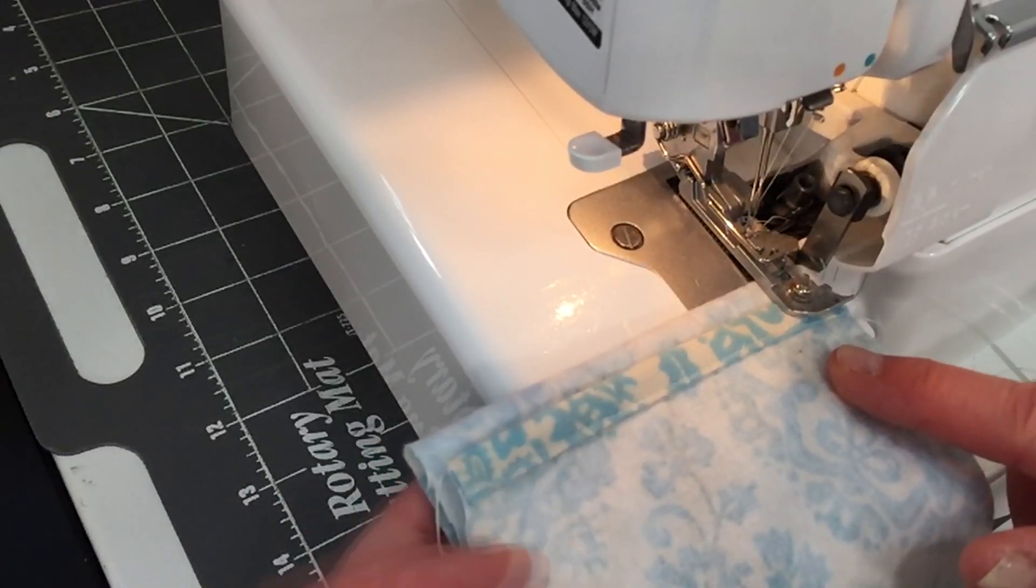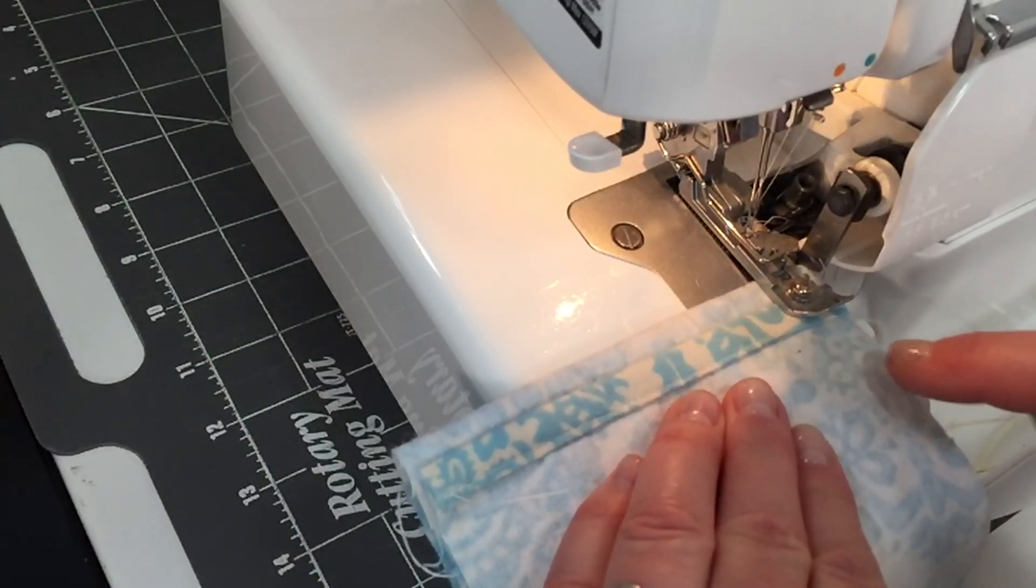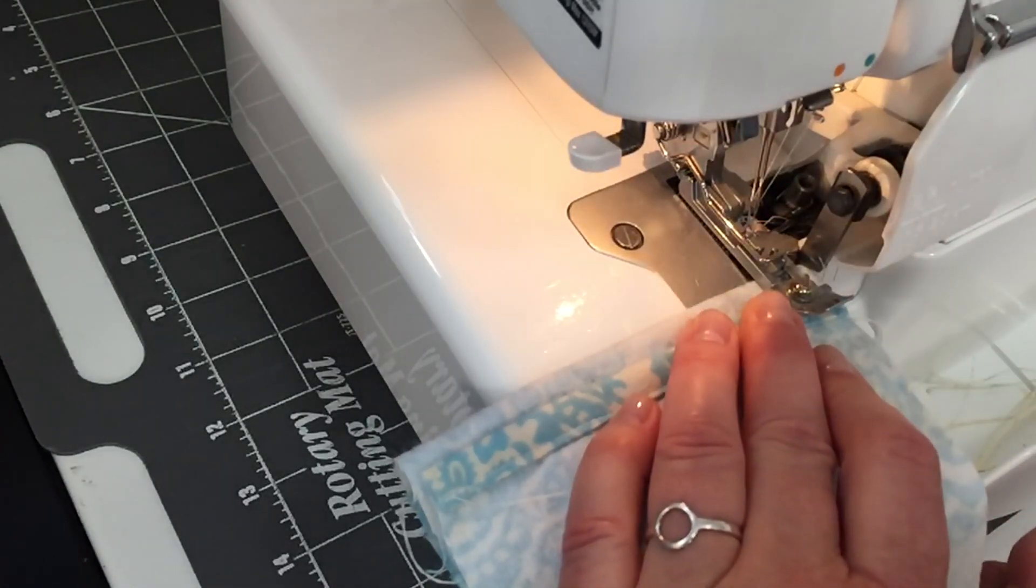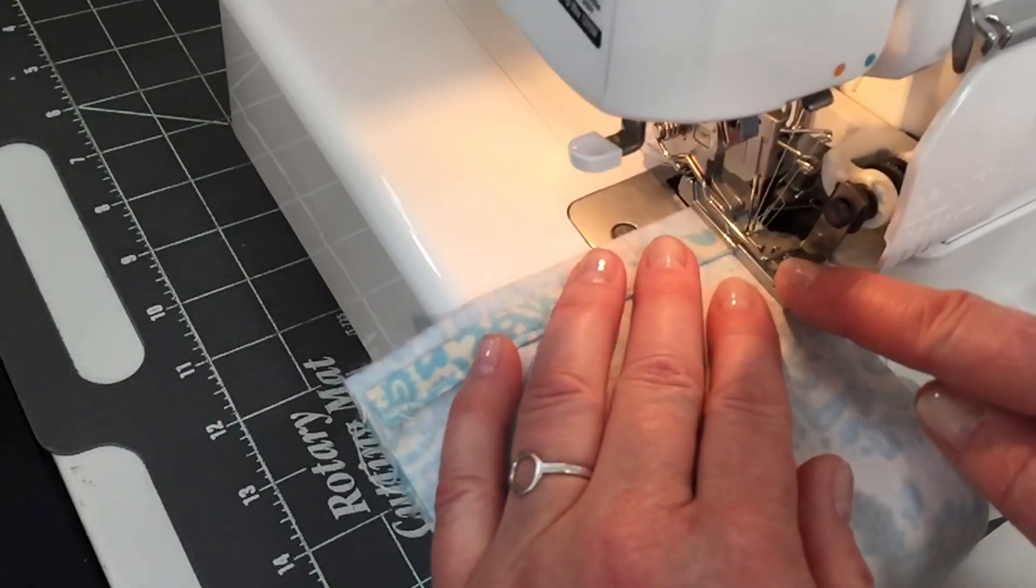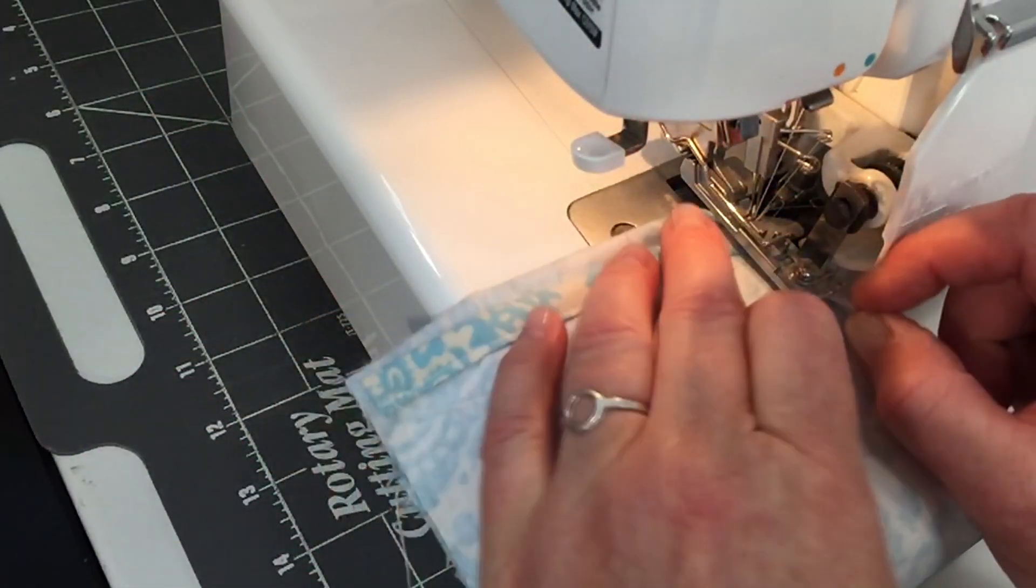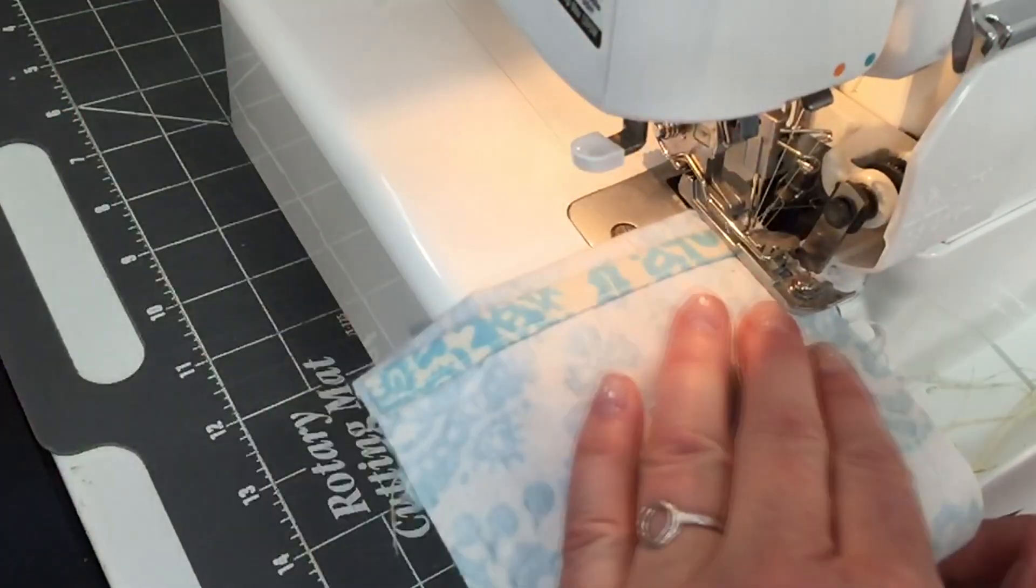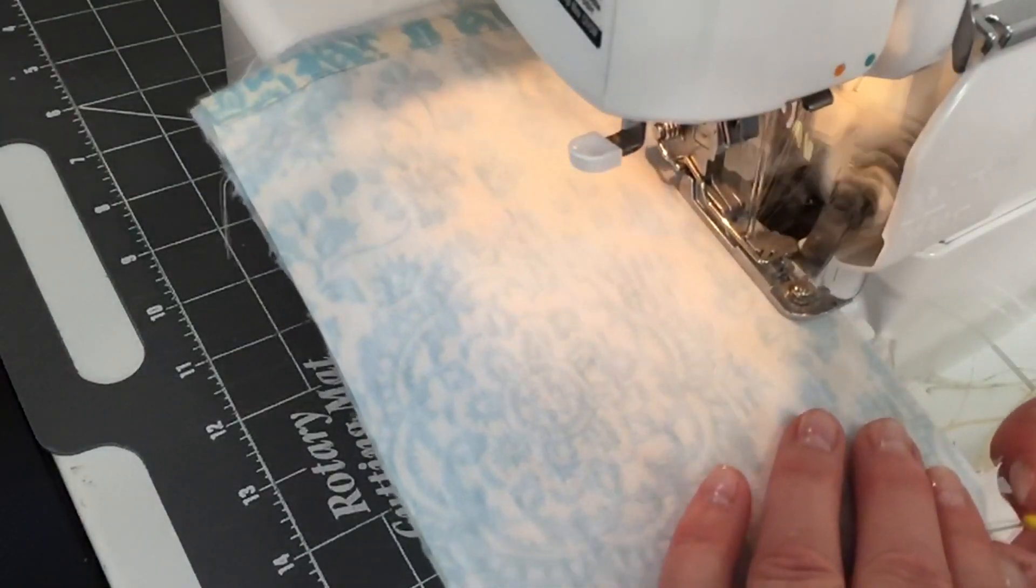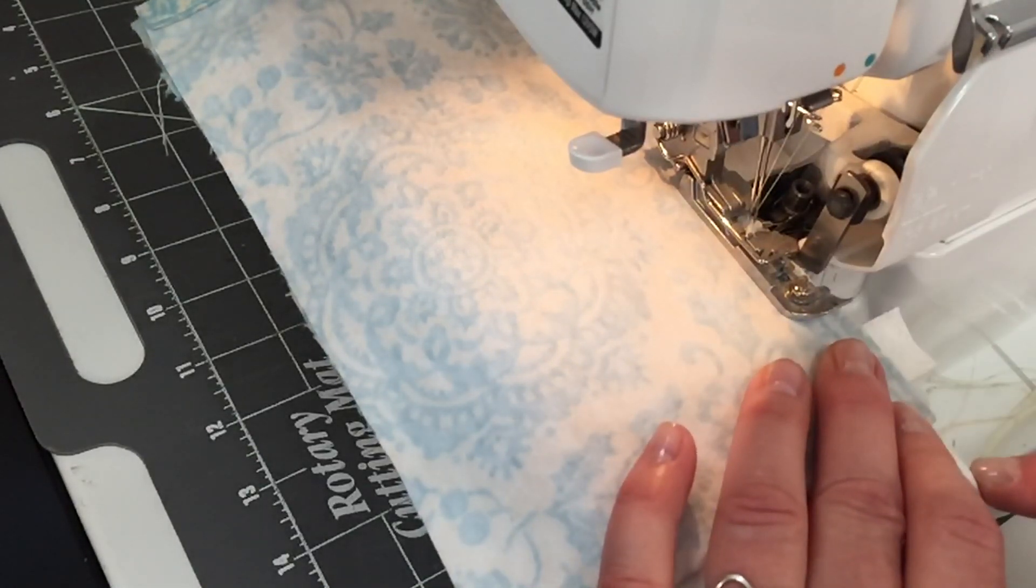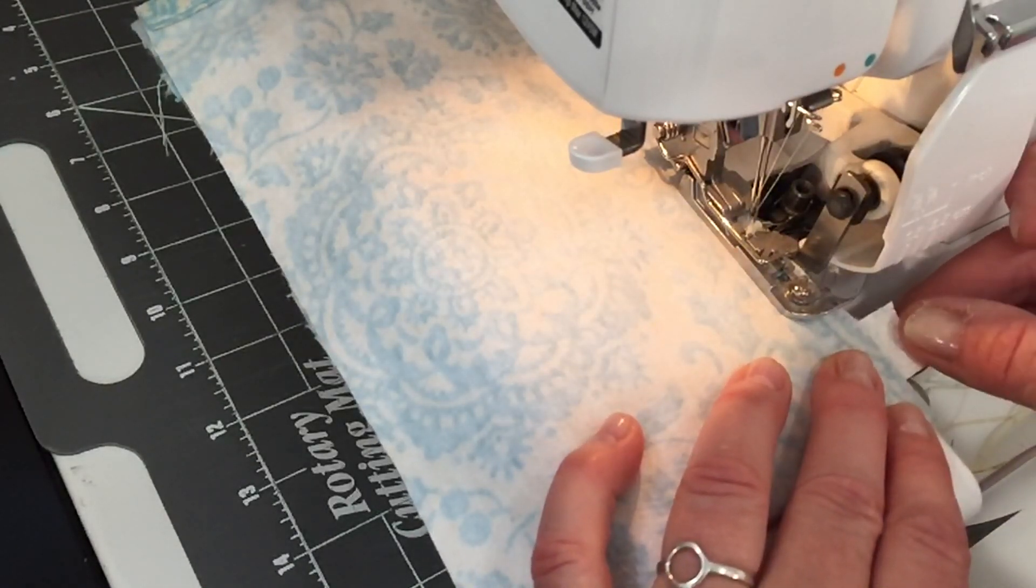When you use a serger, instead of having those tails sticking out the end, I'm going to show you a trick that you can do to keep those thread tails tucked in. Just start sewing, and when you come in after like about a half inch, lift up your presser foot, grab the tail and bring it back underneath the presser foot so that when you sew, it'll catch that.